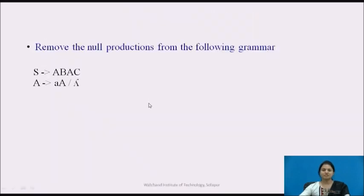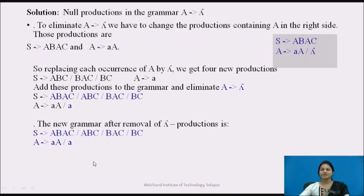Here is a question for you: remove the null production from the following grammar, where S has a given value and A has a given value. After elimination of null production, since A has a null value, we substitute null wherever A appears. From ABC we get BC; from BAC we get BC; and with both A's as null we get BC. Remove any duplicates and write the new value.